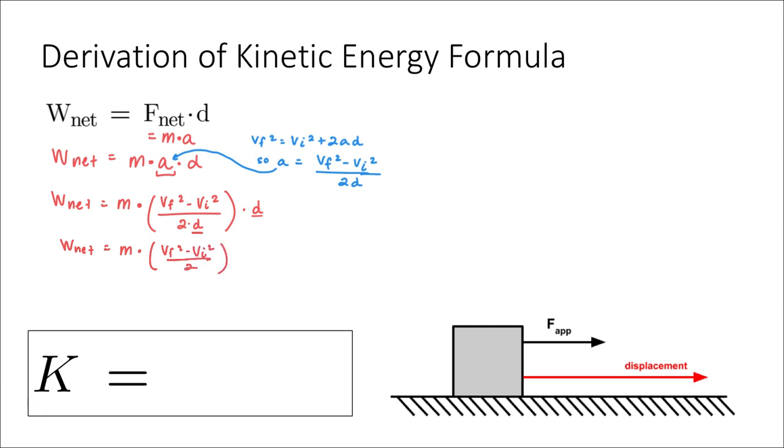We can actually break that fraction apart into two separate fractions as well, equal to mvf squared over 2 minus mvi squared over 2. And then we can show that over 2 is 1 half, which is what we were expecting to see. 1 half mvf squared minus 1 half mvi squared.